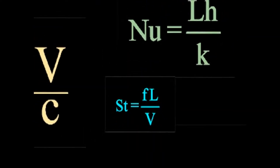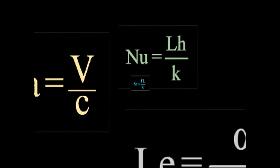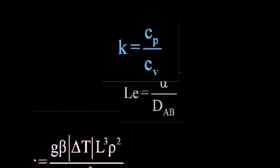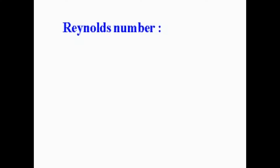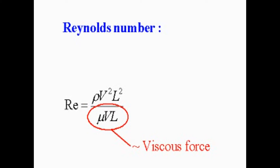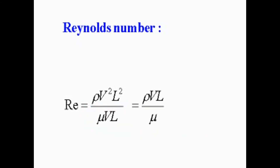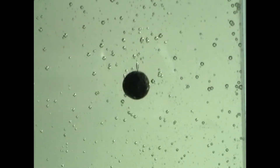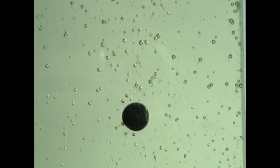There are a lot of these non-dimensional parameters, but the most important one in fluid mechanics, which comes directly from non-dimensionalizing the Navier-Stokes equation, is the Reynolds number. It's defined as the ratio of the inertial force to the viscous force on a body, and it's equal to rho vl over mu, or just vl over nu. When the Reynolds number is much less than one, as in this bead falling through shampoo, the flow is dominated by viscous effects. We call this creeping flow.